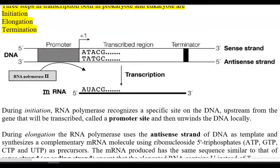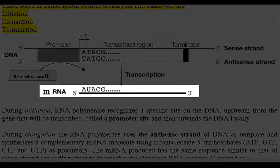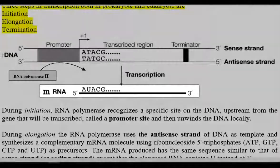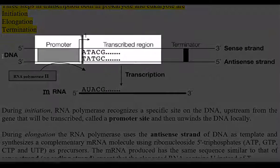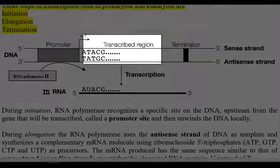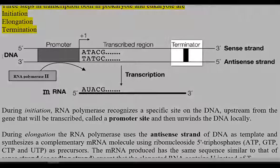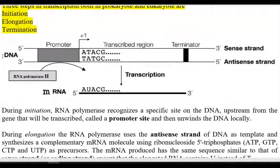This diagram again explains what is a sense strand and anti-sense strand. Due to transcription, an mRNA molecule is formed. In the sense strand, you can find some specific regions: a promoter region, a transcribed region, and finally a terminator region. These are the things we need to know so that we can easily understand the concept of transcription.